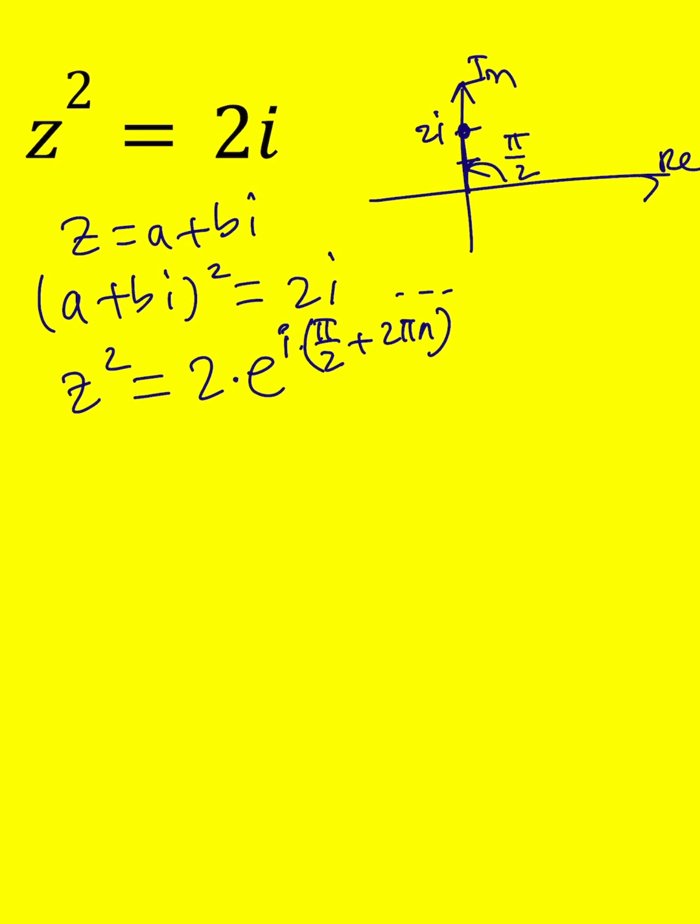Now when you square root it or try to solve for z, you're basically going to be square rooting the 2 and then cutting this angle in half.